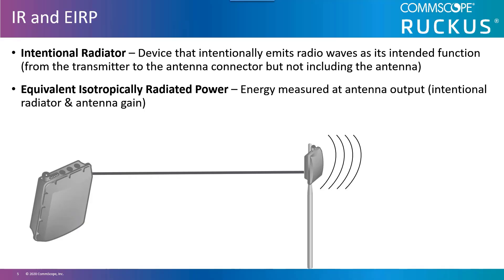The intentional radiator and equivalent isotropically radiated power levels are two things that are really important for RF math calculations and making sure that you are in compliance with local regulatory domains. In RF math there are a few terms you really need to understand. The transmitter and receiver are obviously the device that creates the signal and the device that receives the signal respectively. For the math you will need to understand two important terms for calculations and knowing where transmit powers are calculated.